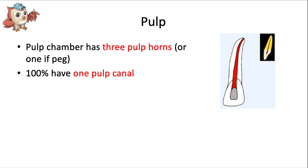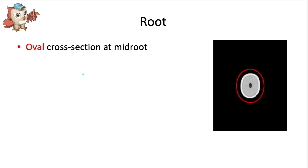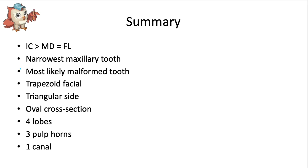As far as the pulp is concerned, just like the maxillary central, it usually has three pulp horns — except when there is a peg lateral, in which case there's only one pulp horn. There's almost always just one pulp canal. If we cut the tooth into cross-section at the middle of the root, we see an oval, not a triangle, and that's because of how convex that facial surface is.